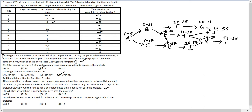For project 2: Stage A starts on day 6 and goes to day 10. Stage B has two constraints — after day 10 and after day 21 — so it starts on day 22 and goes to day 37. Stage C goes from day 18 to day 29. Stage D starts on day 30 and goes to day 39.